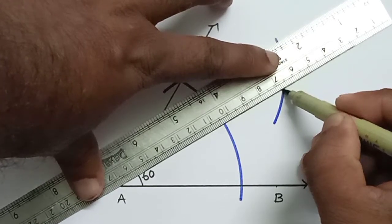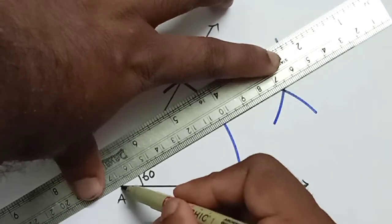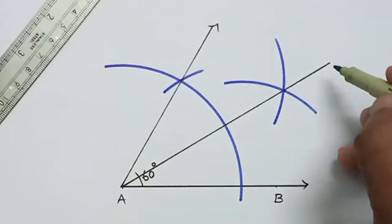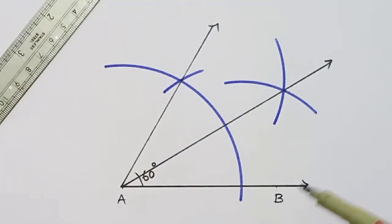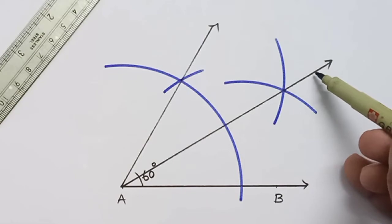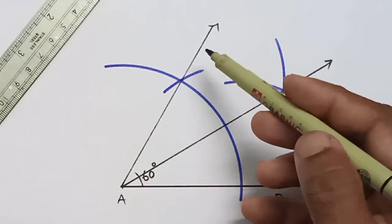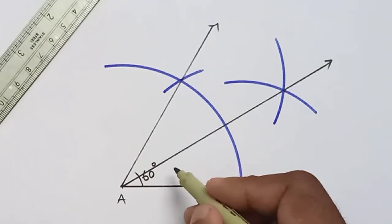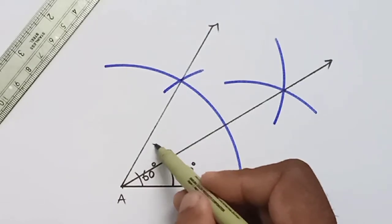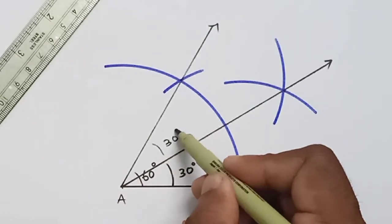Now join this intersecting point to the vertex A. This ray will be angle bisector of 60 degree and this angle will be 30 degree. Also this angle will be 30 degree.